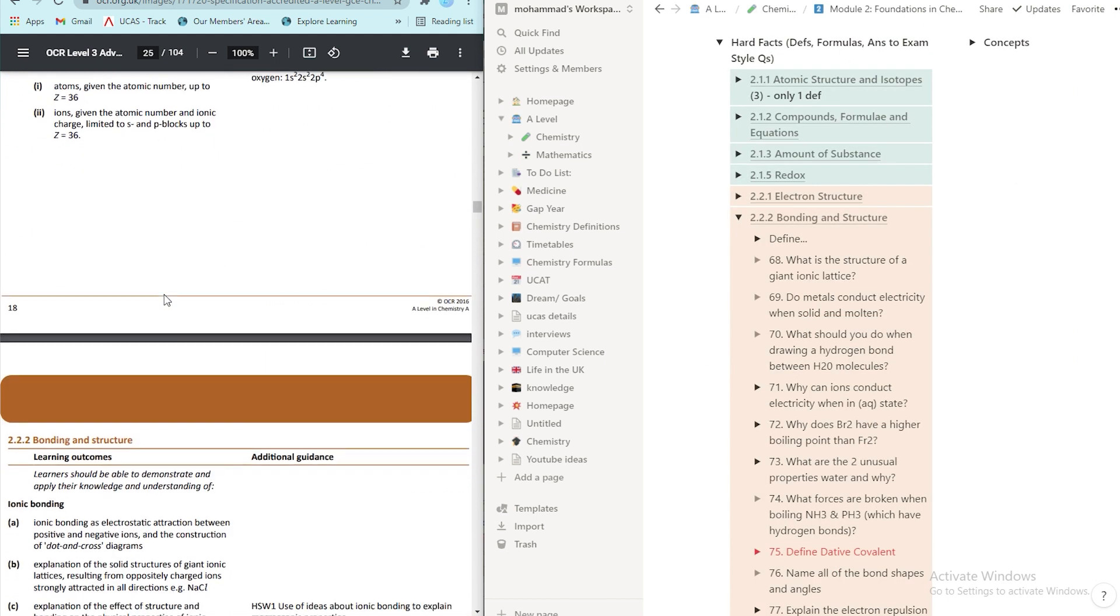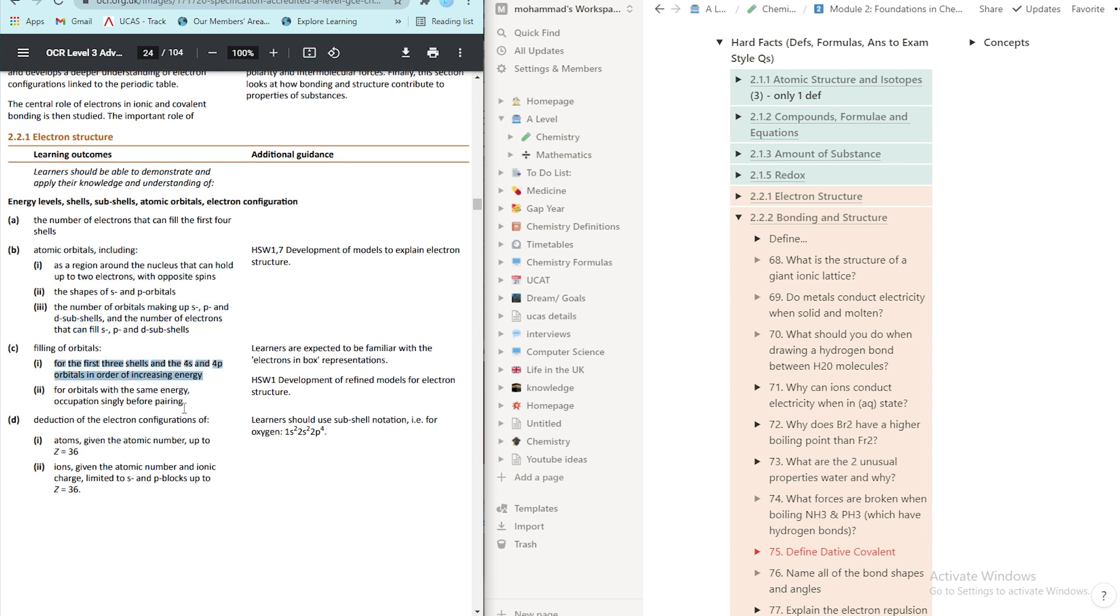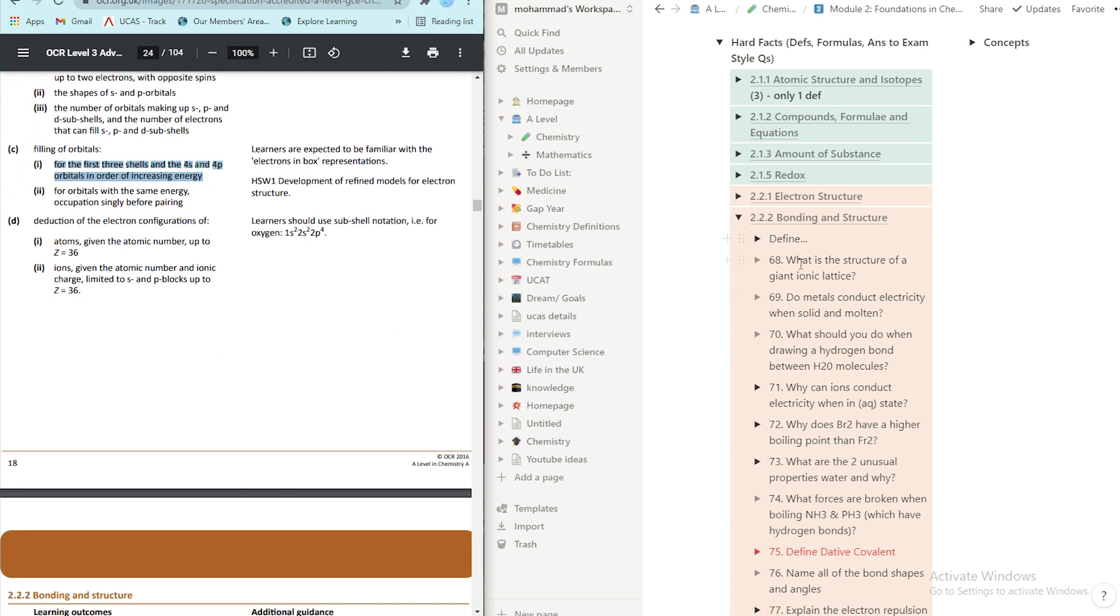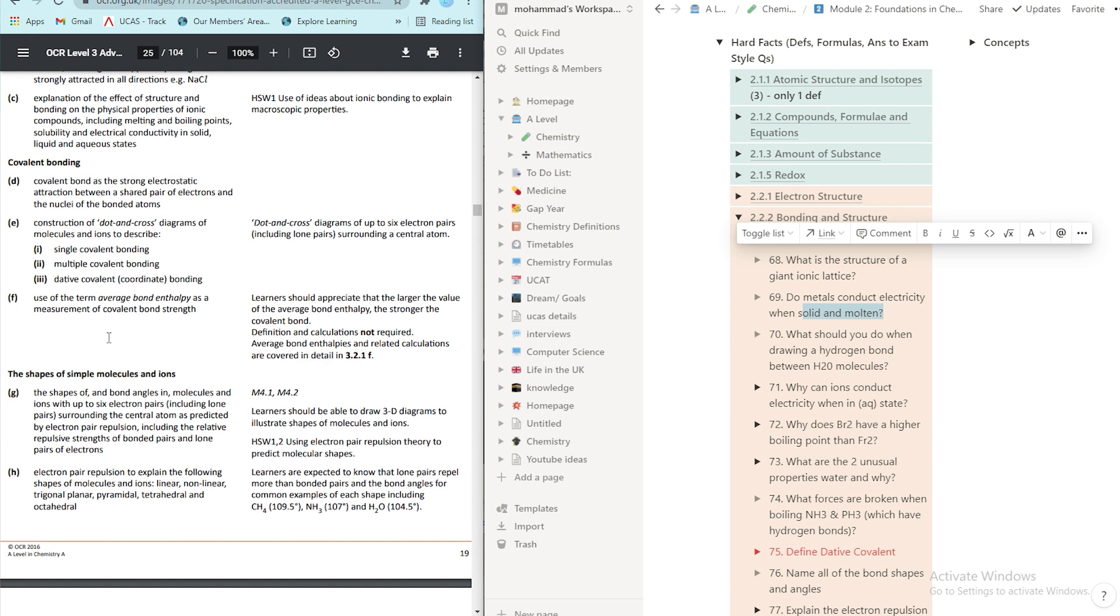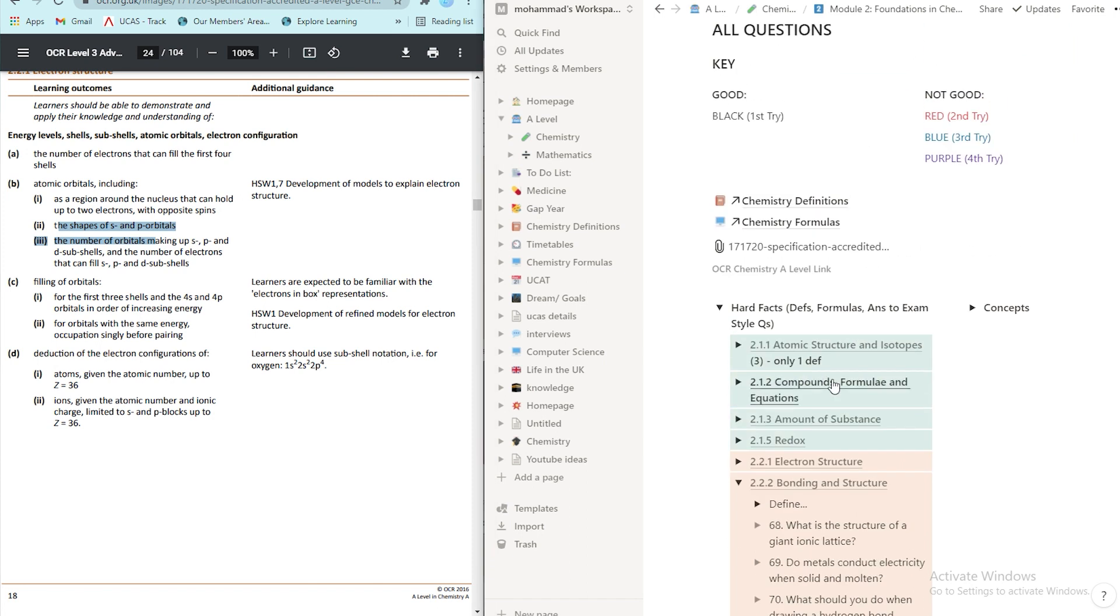So I went through the specification and anything that came up, like something that I had to learn. So everything here really, I made it into a question format. But the thing is, you need a third thing. You need your textbook from your school or your booklets that they give you from what they teach you with. So you would get that on your desk. And while going through the specification, you would also go through the piece of material on the desk through each topic. So you're making sure that you don't miss anything. And that's it really. That's how you make questions. And so you keep on doing it for each module.